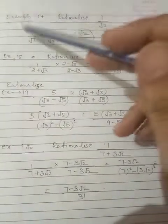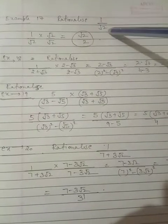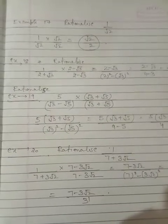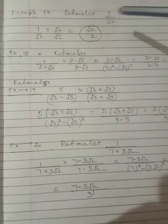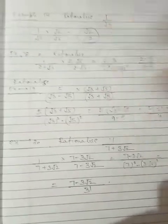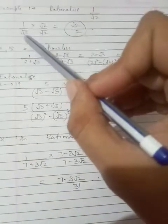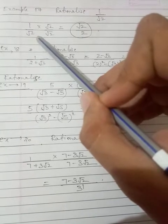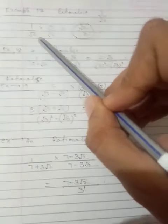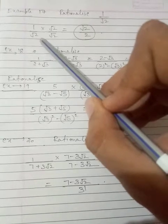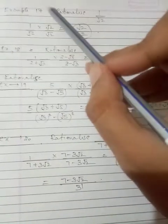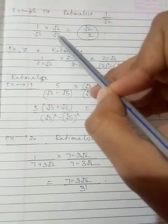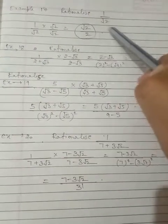Now the next example is: rationalize 1/√2. Our topic is rationalization. When we rationalize the denominator, there should be no irrational number in the denominator. We multiply and divide by √2, so that √2×√2 = 2, which is a rational number in the denominator.